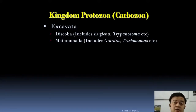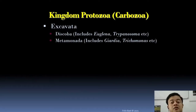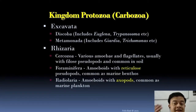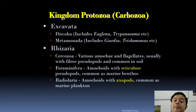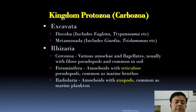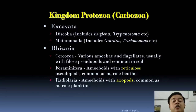Inside Excavata there are two major groups: Discoba and Metamonada. Discoba includes Euglena, Trypanosoma, etc., and Metamonada includes Giardia, Trichomonas, and so on. Then comes Rhizaria, which contains Cercozoa, Foraminifera, and Radiolaria — these are the major groups of Rhizaria. Cercozoa consists of various amoebae and flagellates usually with phyllose pseudopods, and is common in the soil. Phyllose pseudopods are rope-like or hair-like pseudopods — that is a speciality of Cercozoa.